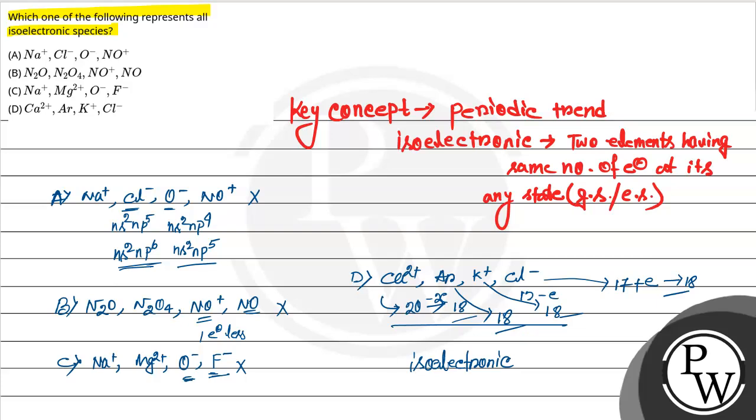So 4 species is 18 electrons, so this group is called isoelectronic. This means even if charge is different - 2+ charge, neutral, +1 charge, minus charge - if electrons are same, then it's isoelectronic. So our answer is option D.